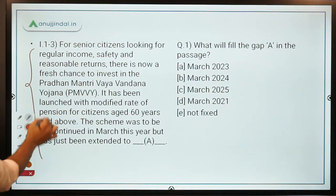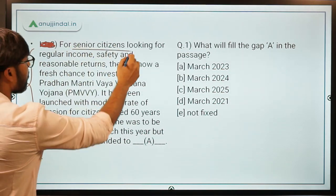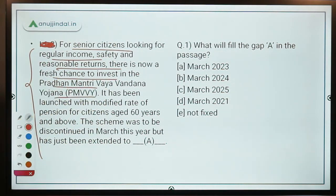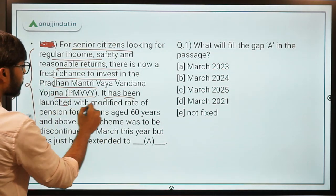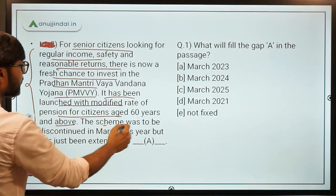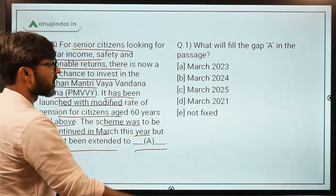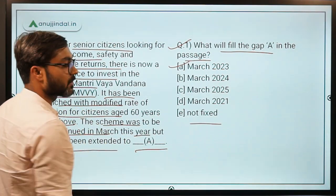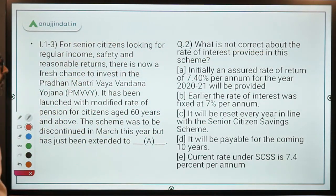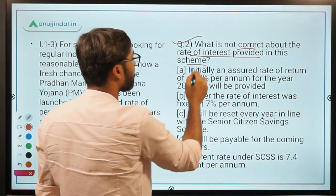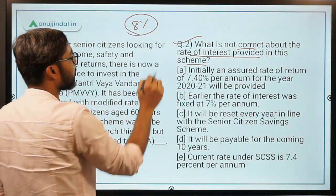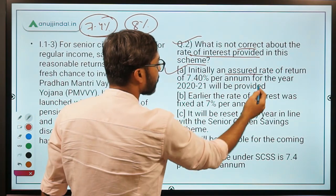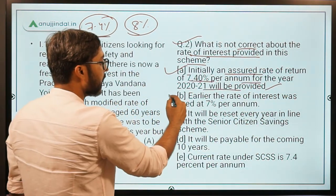Now let's look at some practice questions. A passage states: 'For senior citizens looking for regular income, safety and reasonable returns, there is now a fresh chance to invest in Pradhan Mantri Vaya Vandana Yojana.' It has been extended till March 2023, with modified rates for citizens aged 60 years and above. The question asks what fills the gap in the passage — the answer is March 2023. Question two asks about the rate of interest: it was previously 8 percent, and for 2020-21 it is 7.4 percent. The incorrect statement claiming it was fixed at 7 percent is wrong — option B is correct.